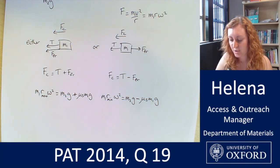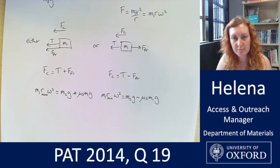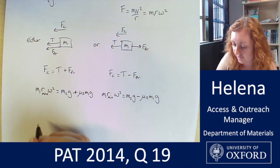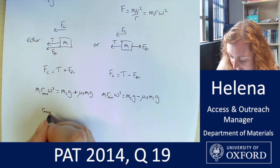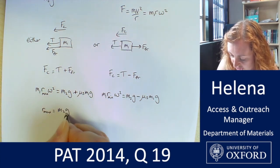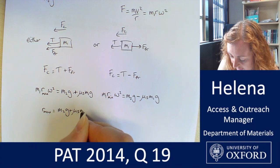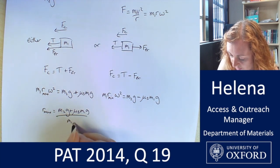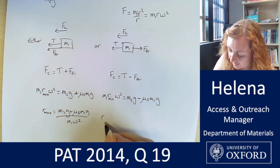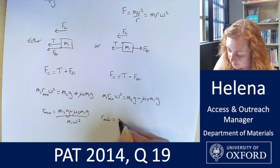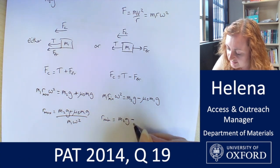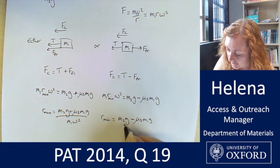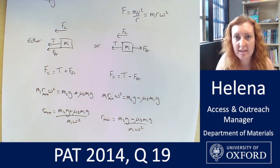So let's divide through by our m1 omega squared in both of our equations to find our values for r. So our r_max is going to give us m2 g plus mu_s m1 g divided by m1 omega squared. And our r_min is going to be m2 g minus mu_s m1 g divided by m1 omega squared.